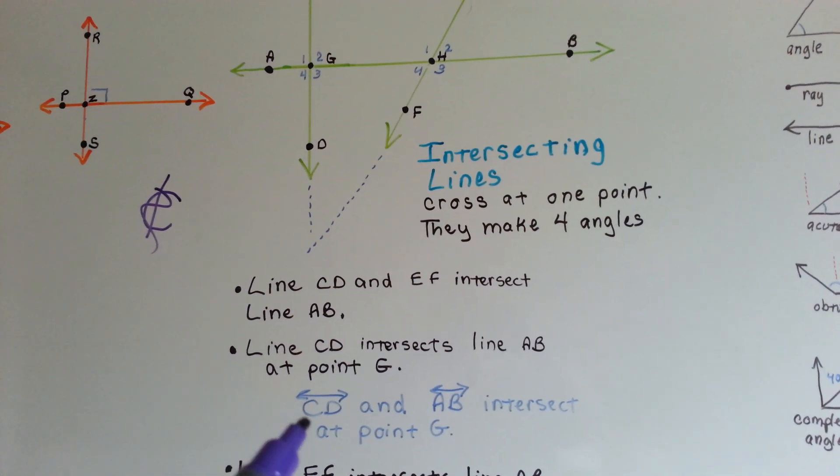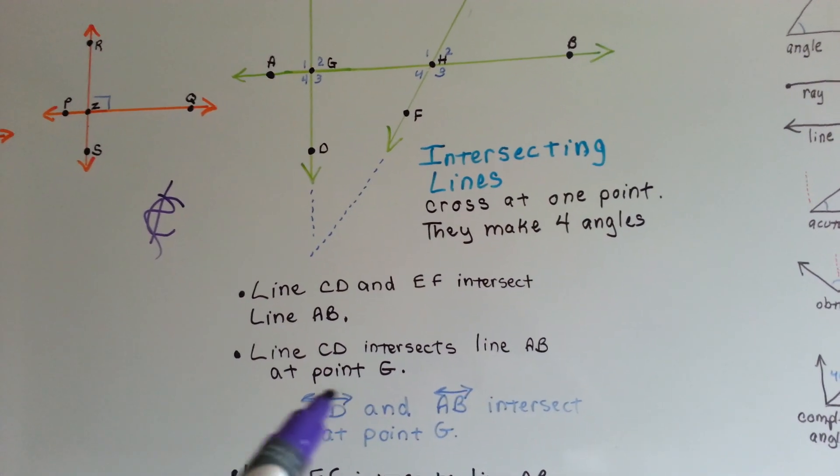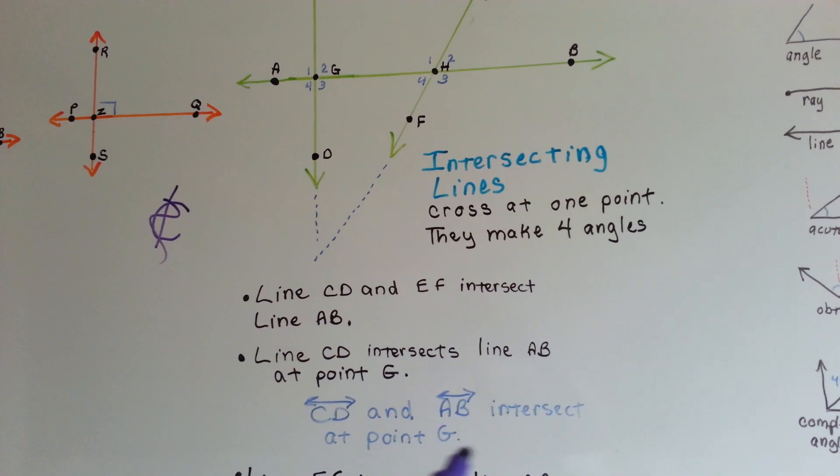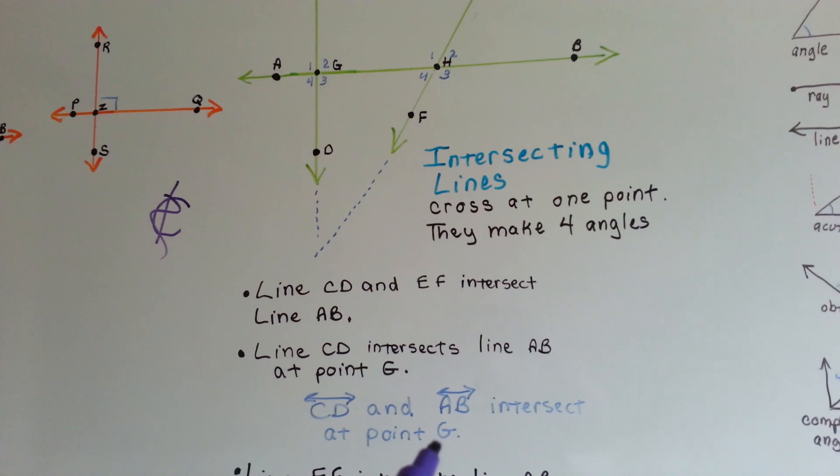And that would be written as CD, with capital letters with a double-pointed arrow, and AB, capital letters with a double-pointed arrow above it, intersect at point G.